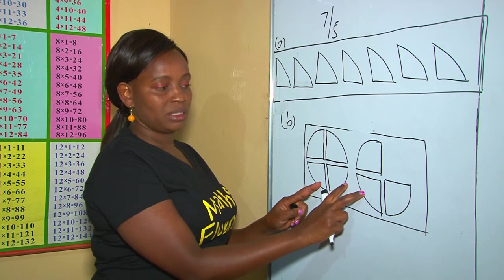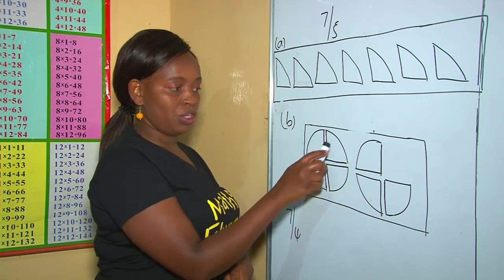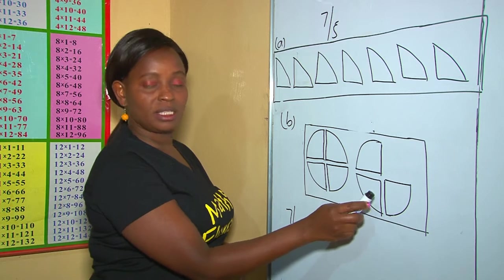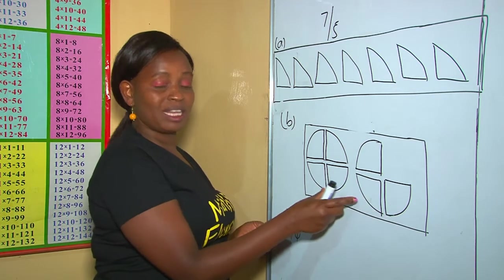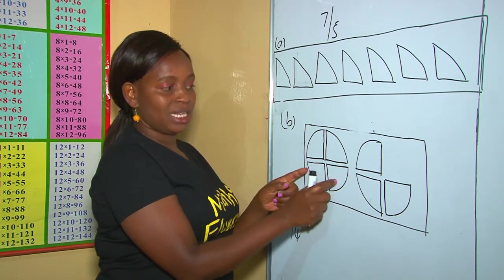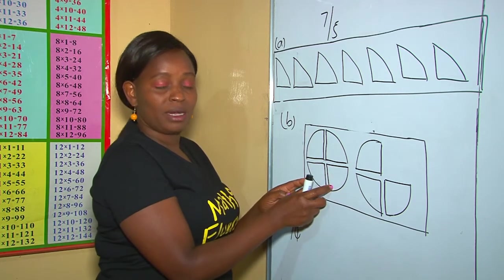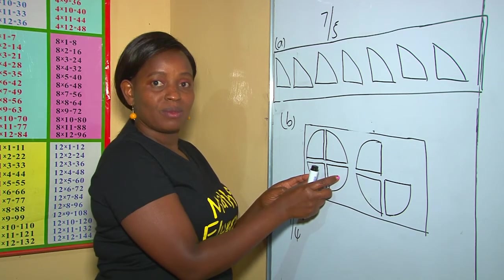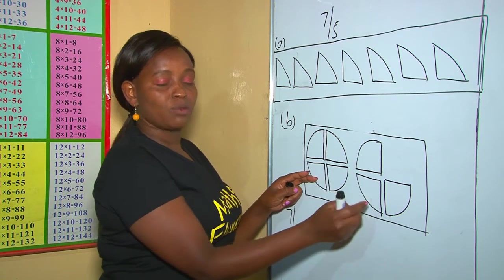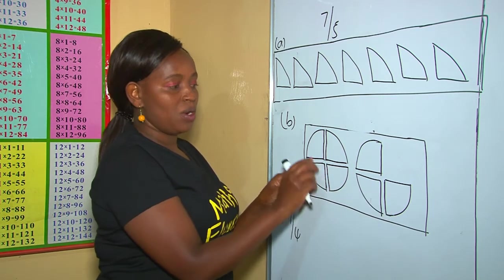What about this part? How many quarters are there? 1, 2, 3, 4, 5, 6, 7. These are also 7 quarters. How many quarters are in this one shape here? These are 4. Remaining how many? 3. Because 4 plus 3 is 7.